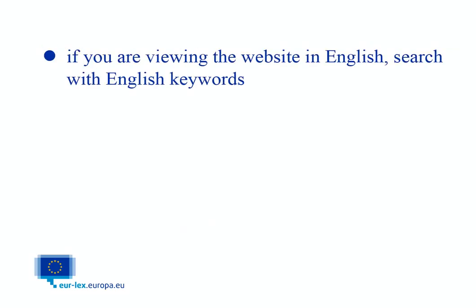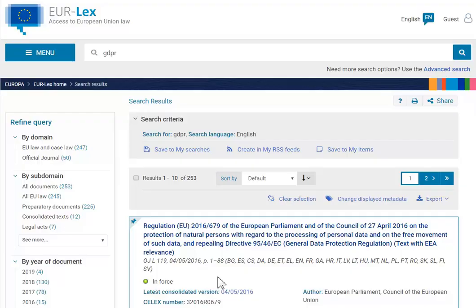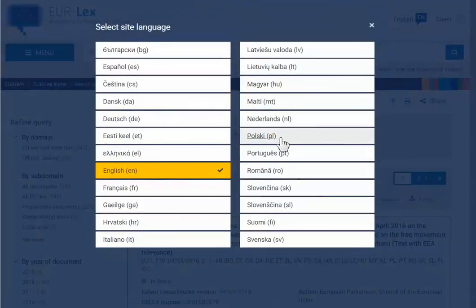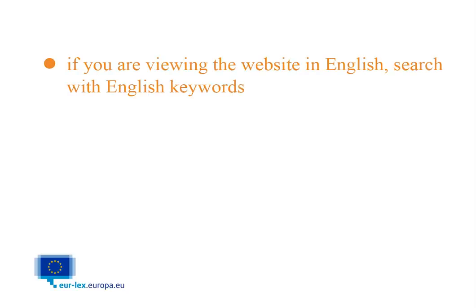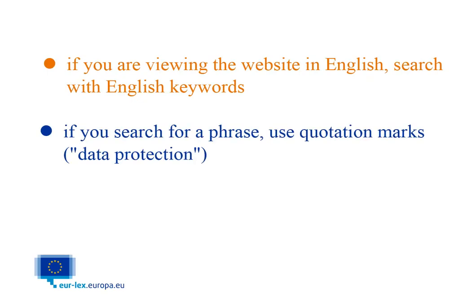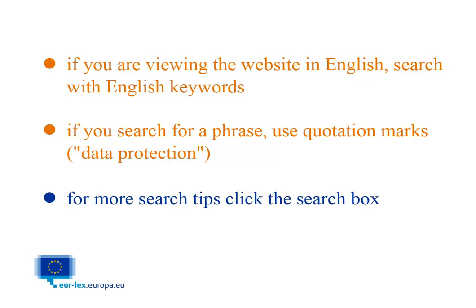If you are viewing the website in English, you can only search with English keywords. However, once you get to the search results page, you can switch the language and the titles will appear in the chosen language if available. If you search for a phrase, use quotation marks. More search tips are displayed once you click the quick search box.